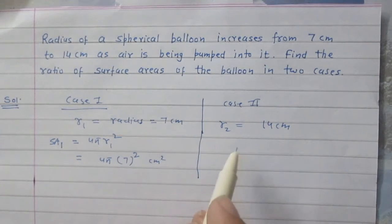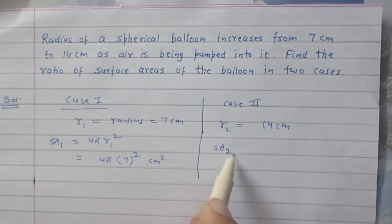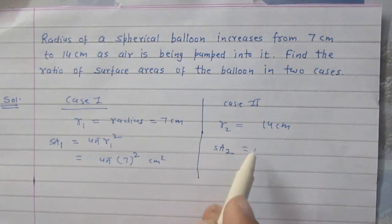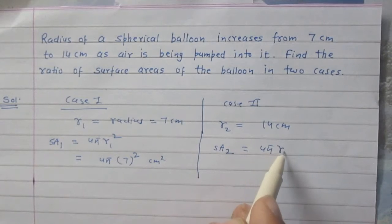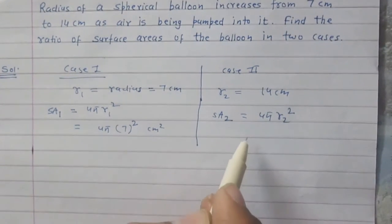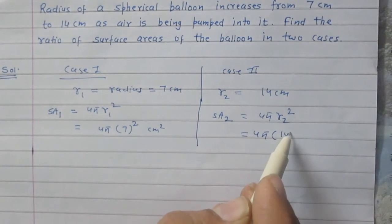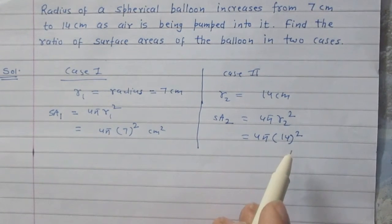Using the same relation, we will find surface area of the balloon in the second case. It is 4πr₂² which is 4π(14)².